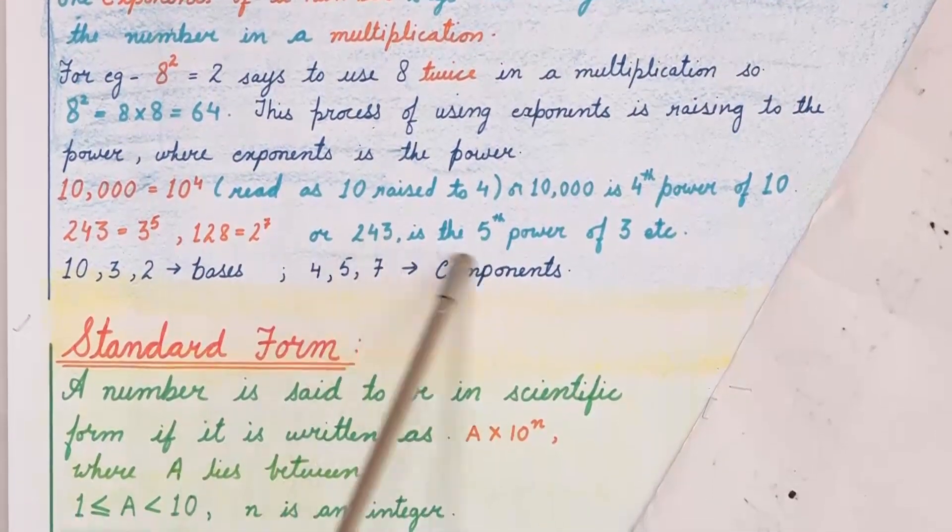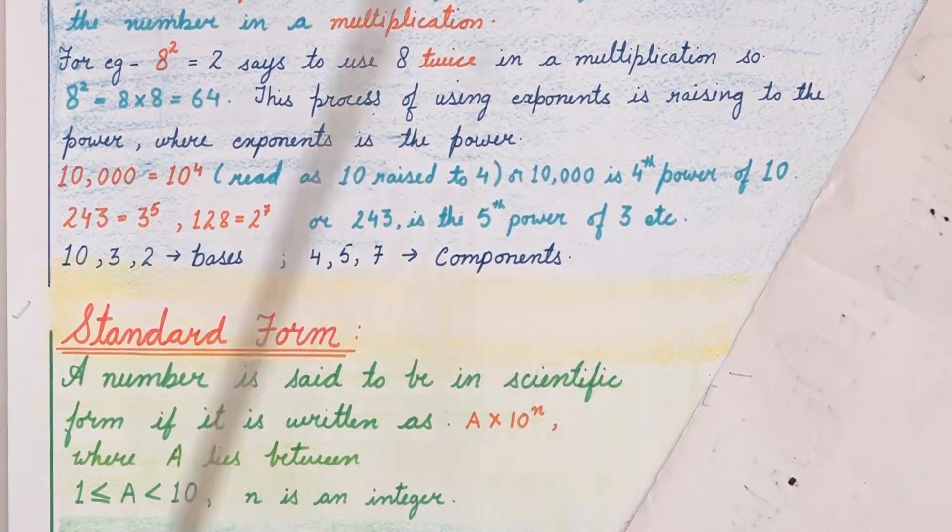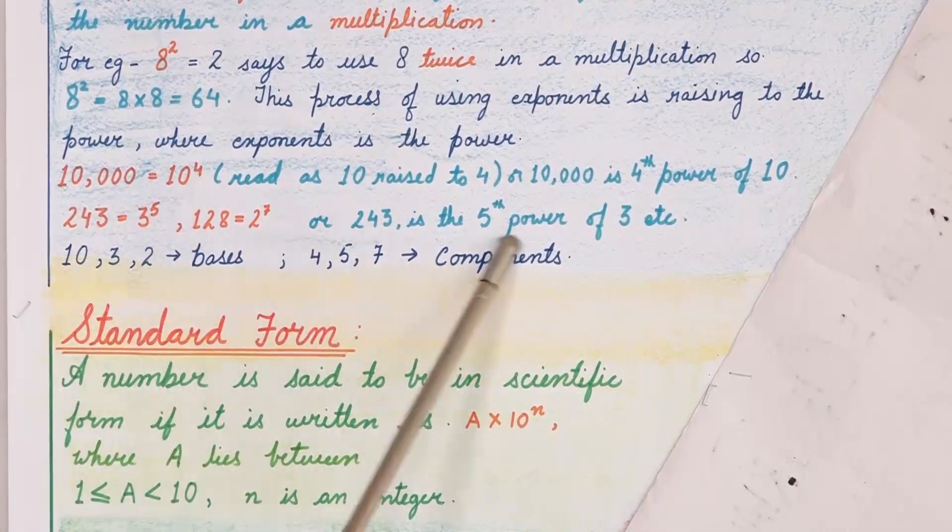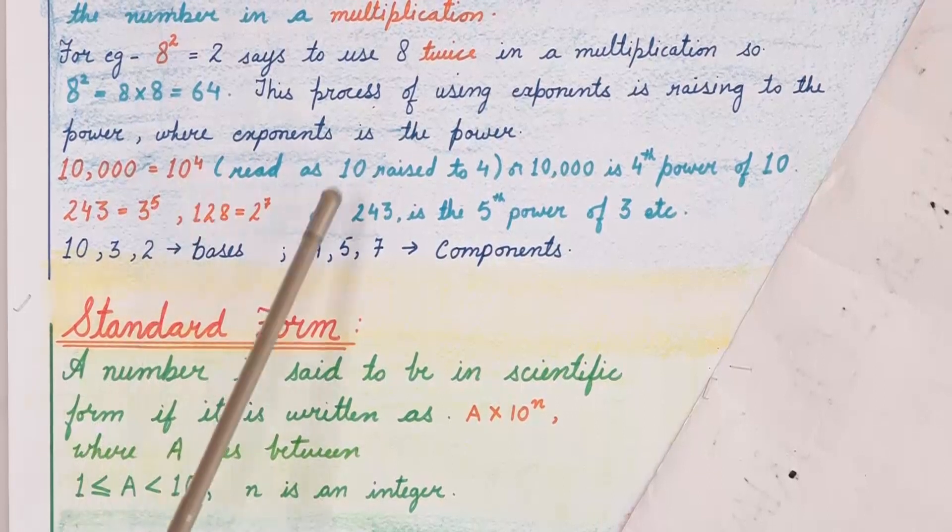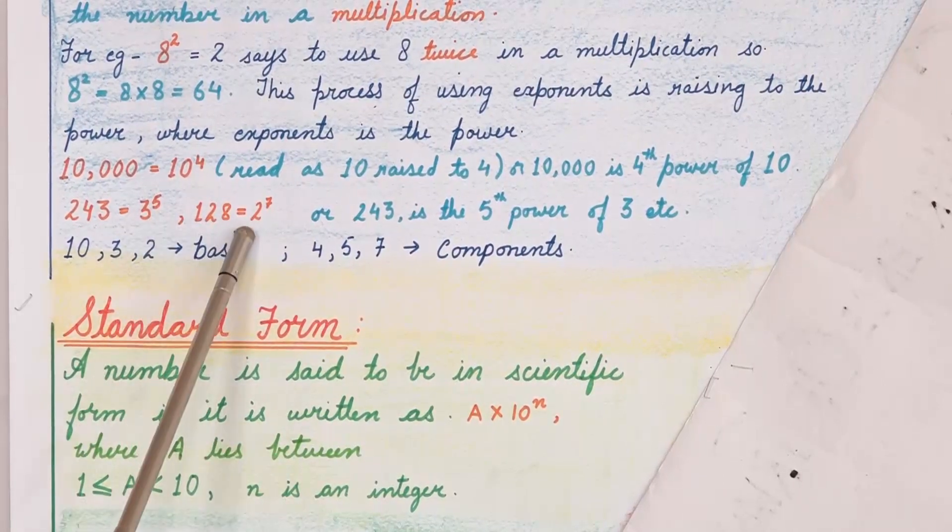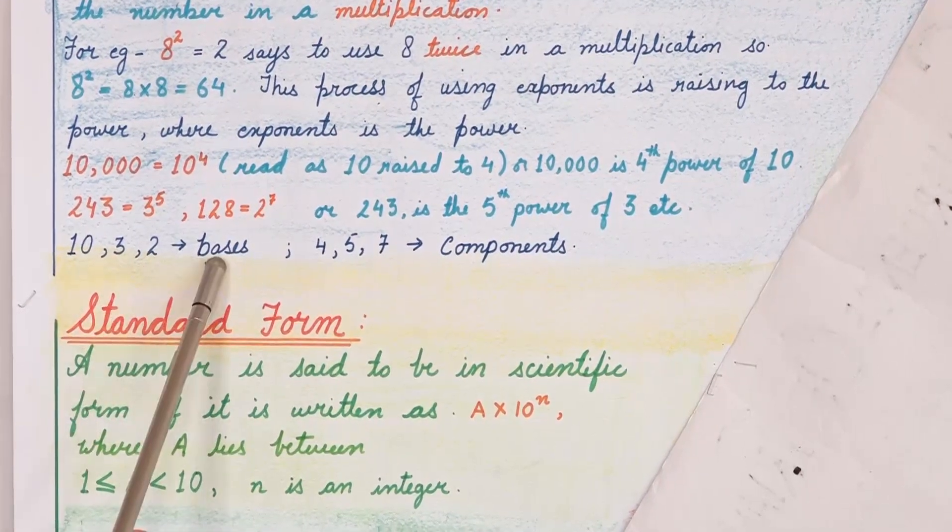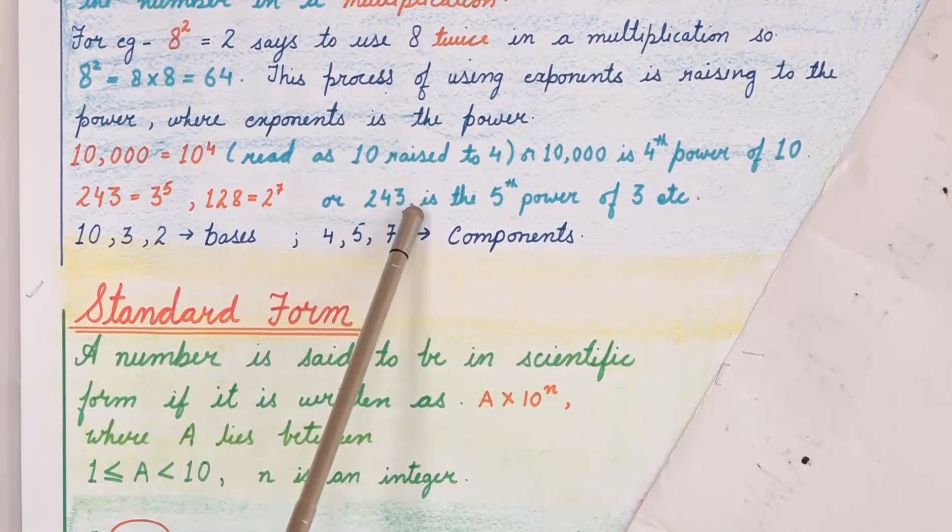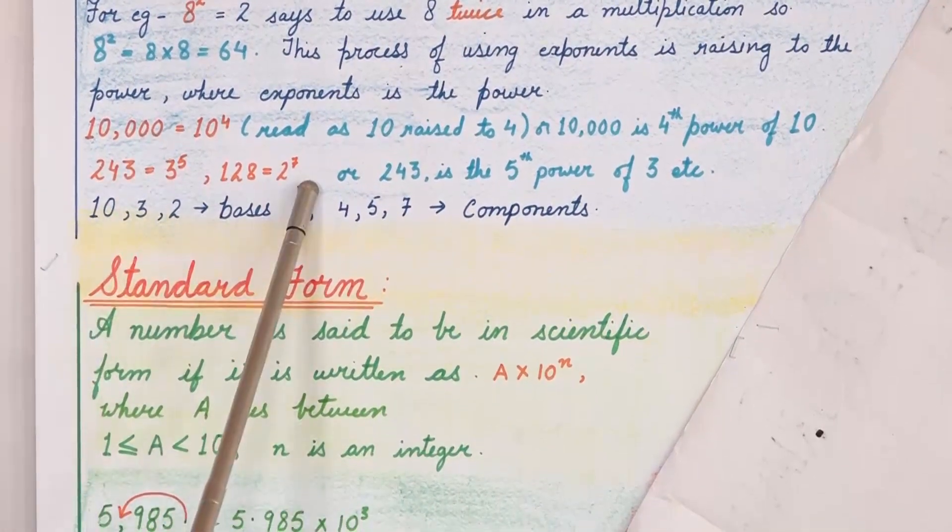Or 243 we can say that 5th power of 3. Now in all these we have noticed that this 10, this 3, this 2, all these 3 are the bases. And 4, 5, 7 are the exponents of these numbers.